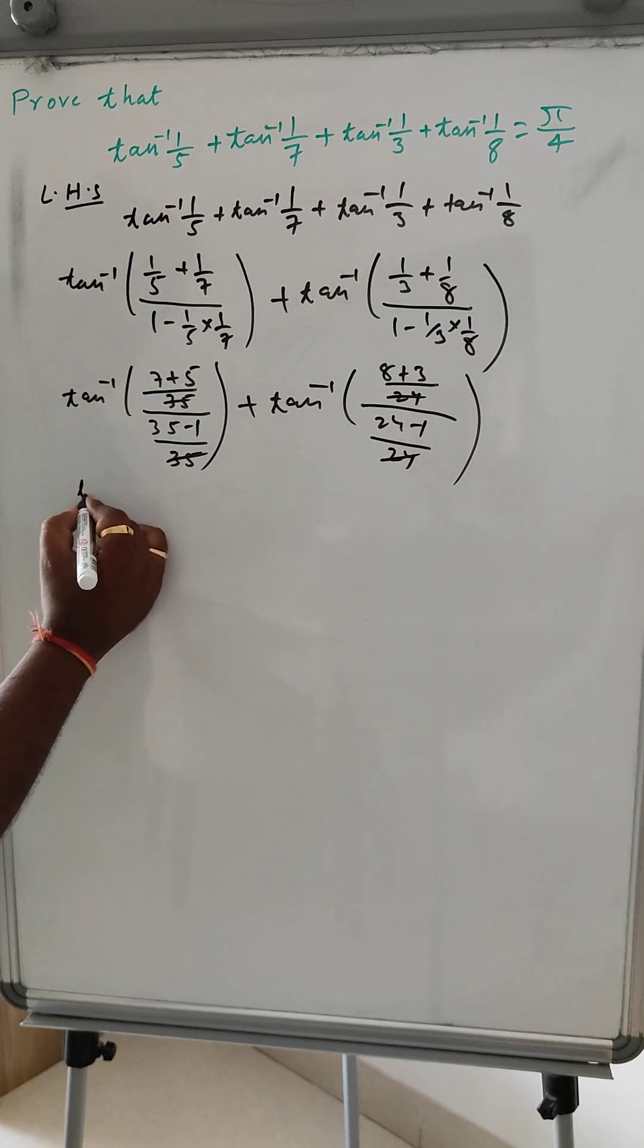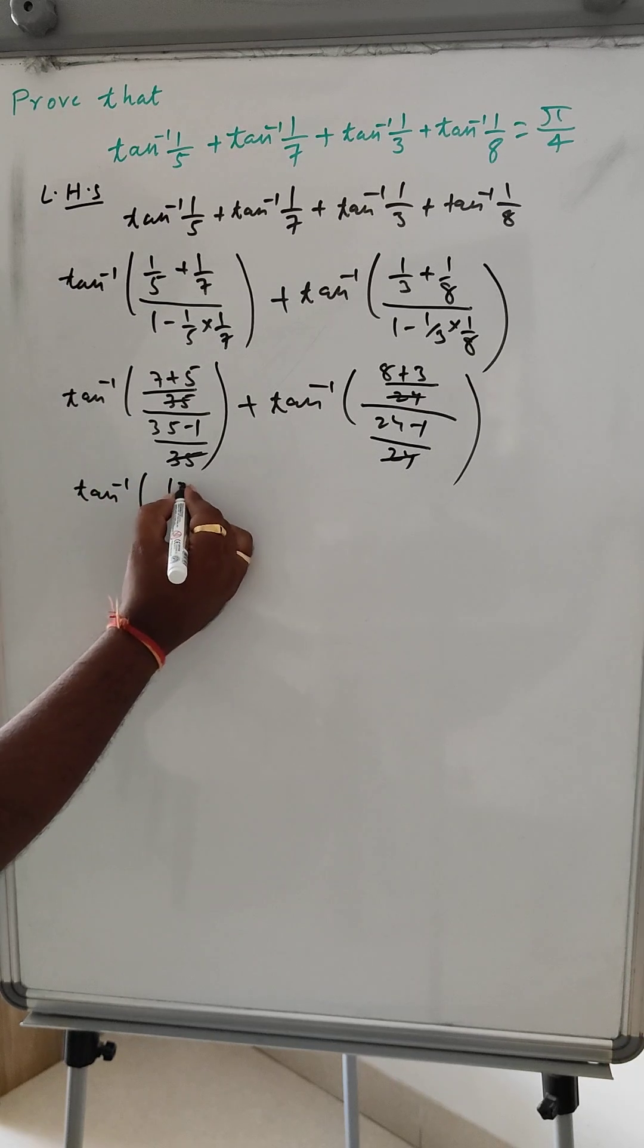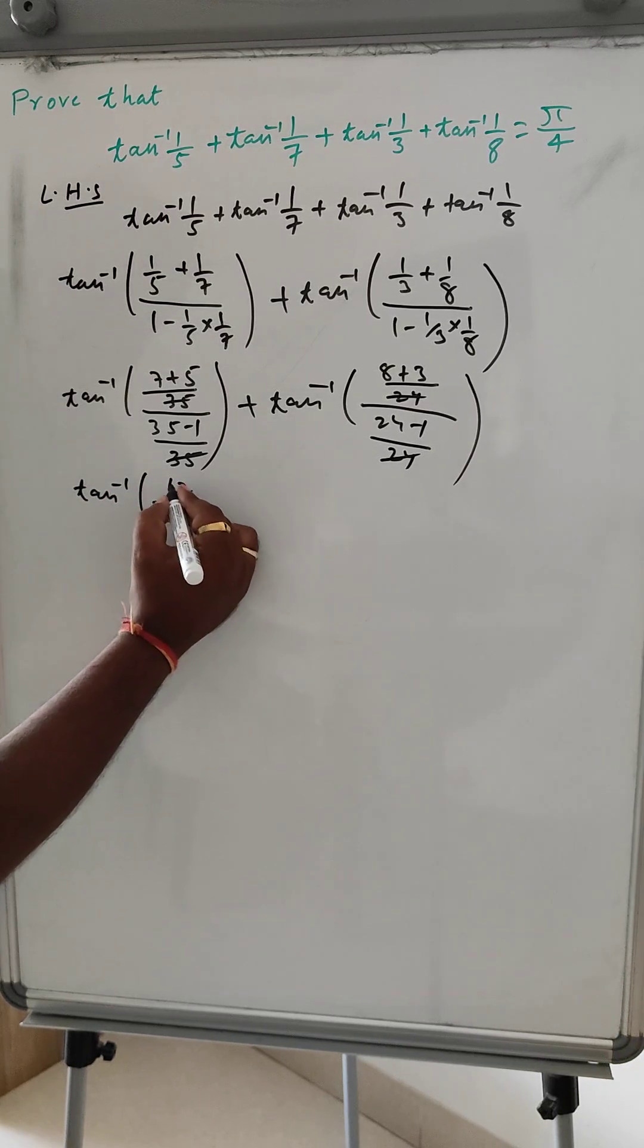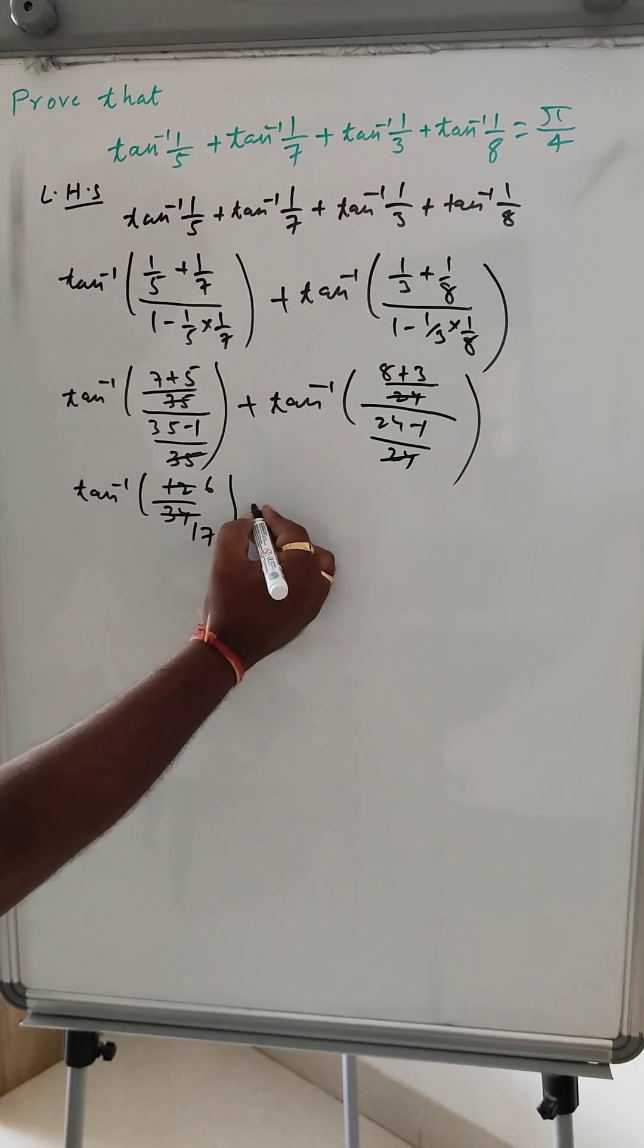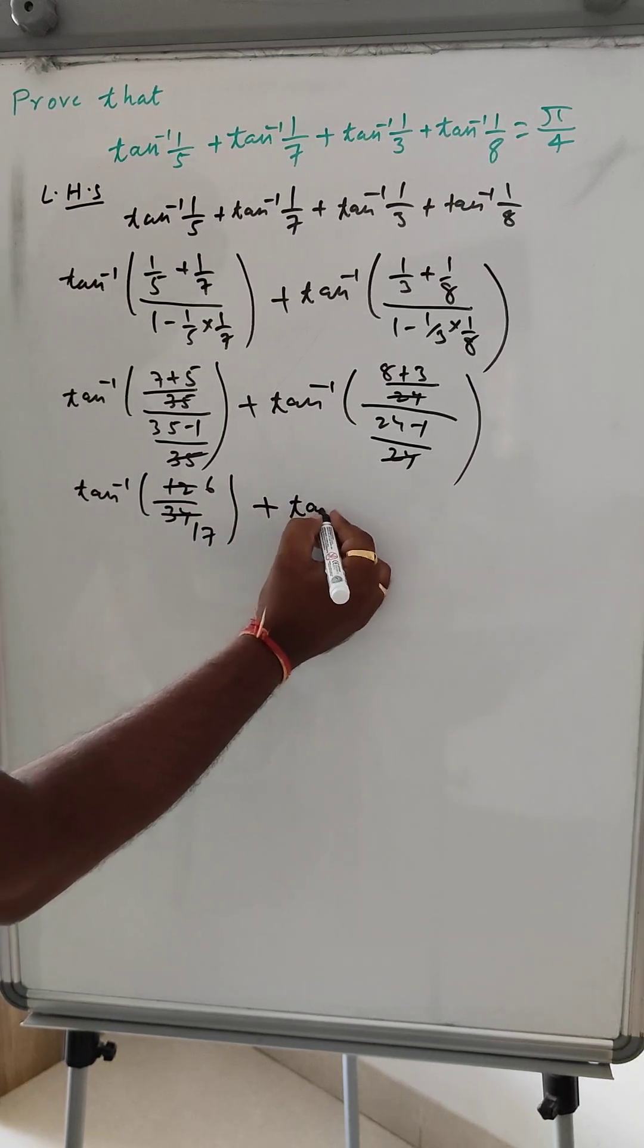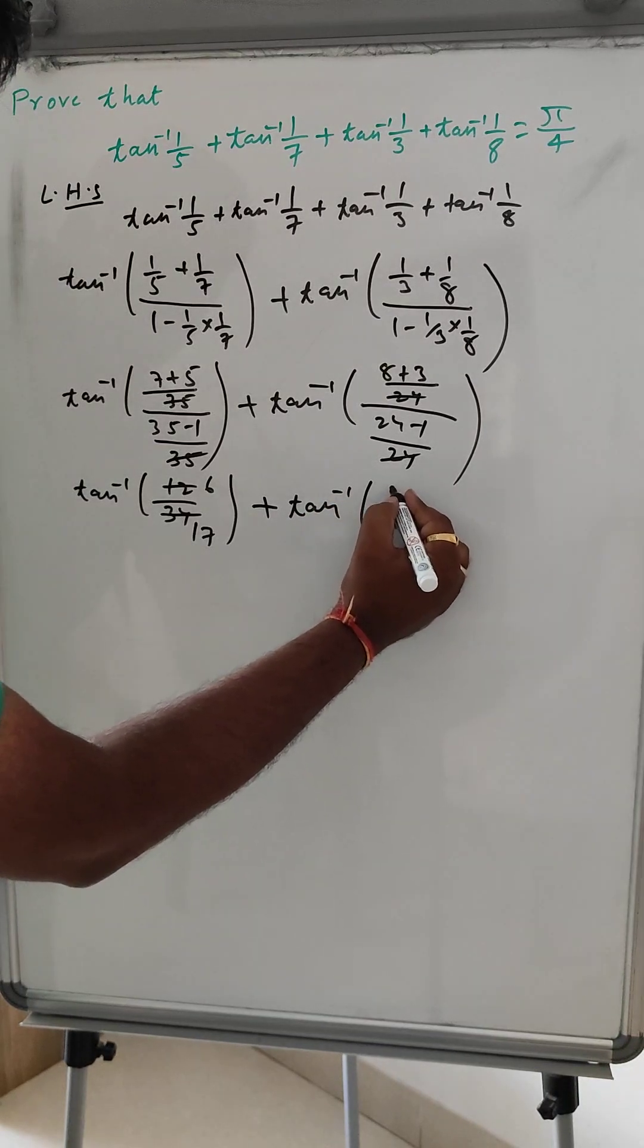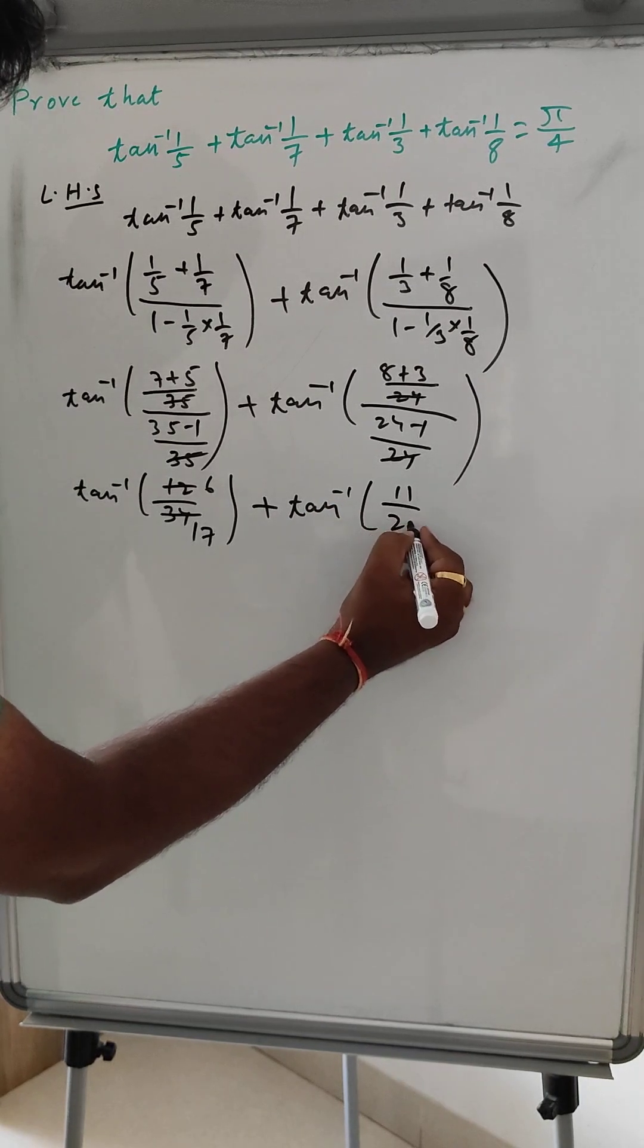This is tan inverse 12 by 34, then this can be 6, this can be 17, plus tan inverse, this is 11 by 23.